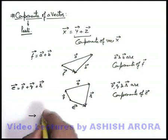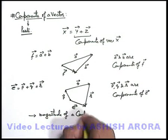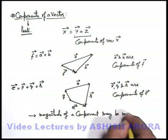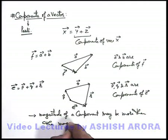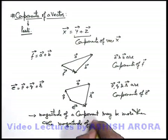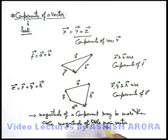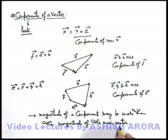So we can note that the magnitude of a component may be more than the magnitude of the main vector of which these are the components. This is not true in case of normal algebra. In the case of vectors, we can simply state that the magnitude of a component may be more than the magnitude of the main vector.